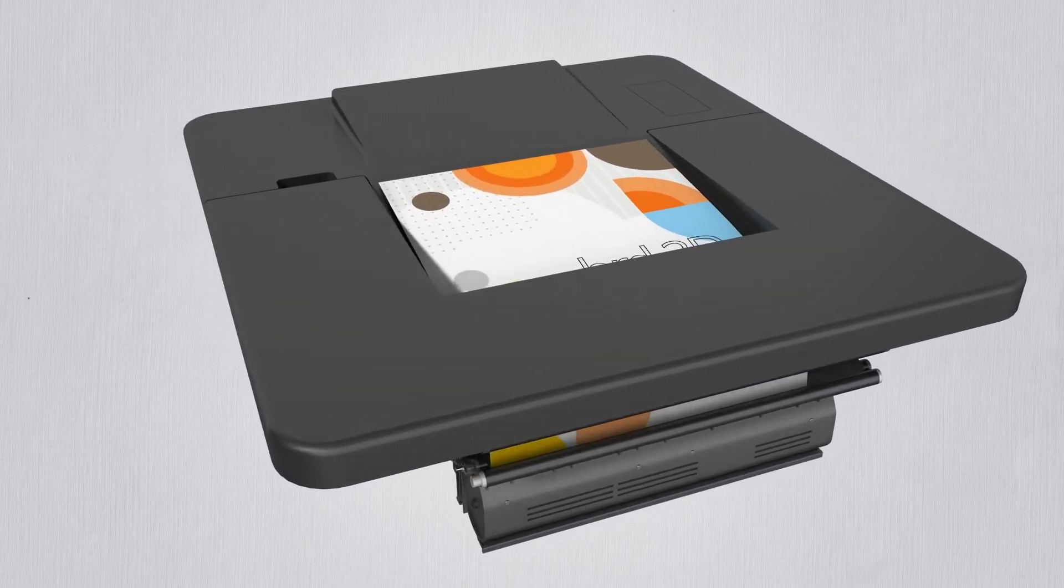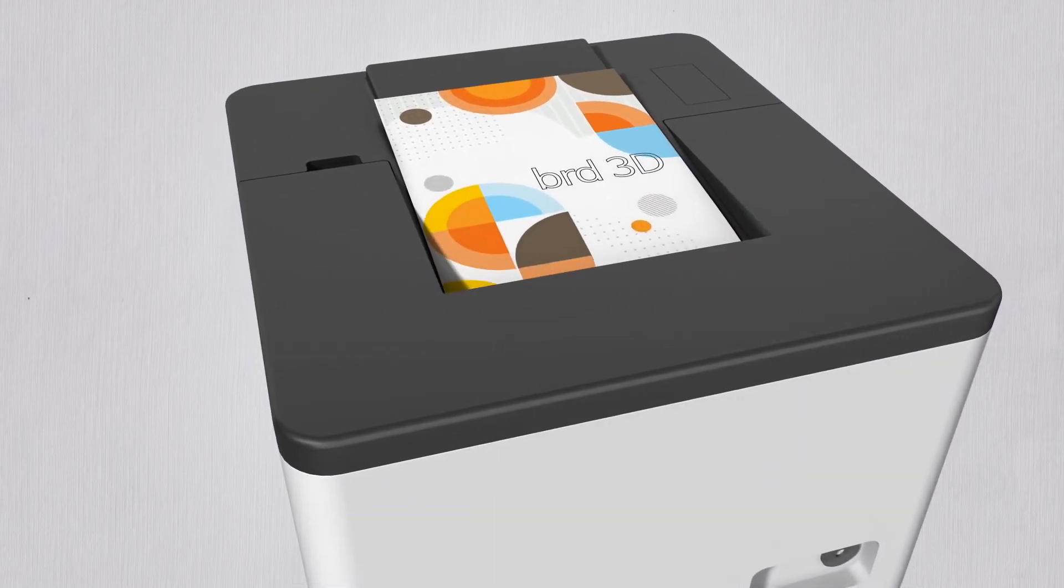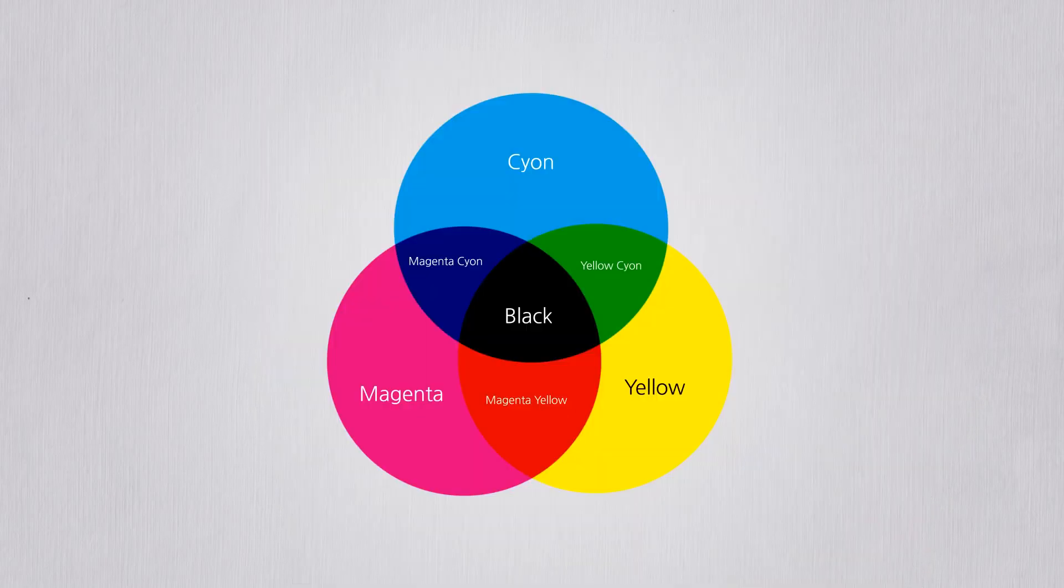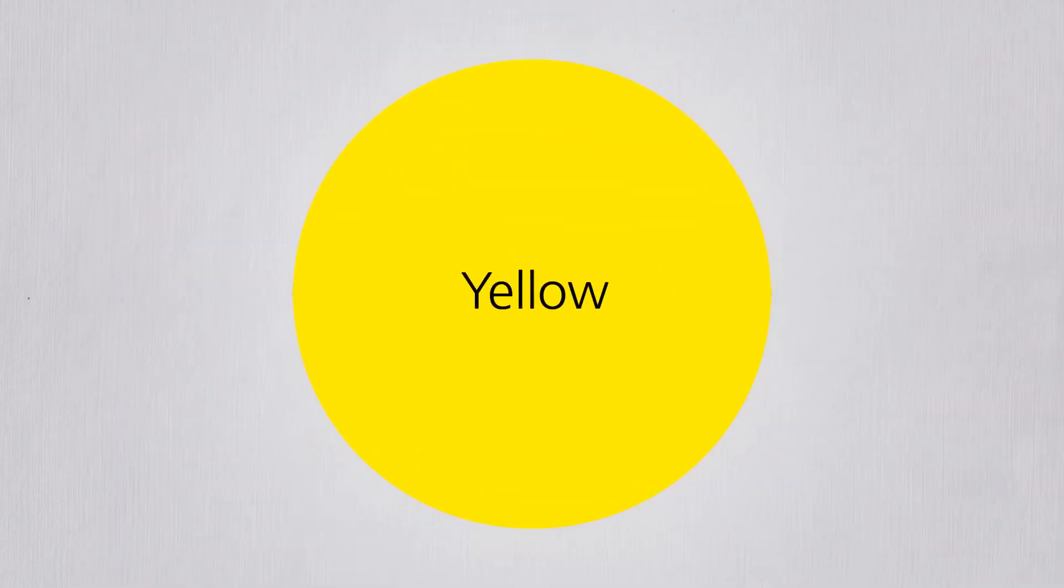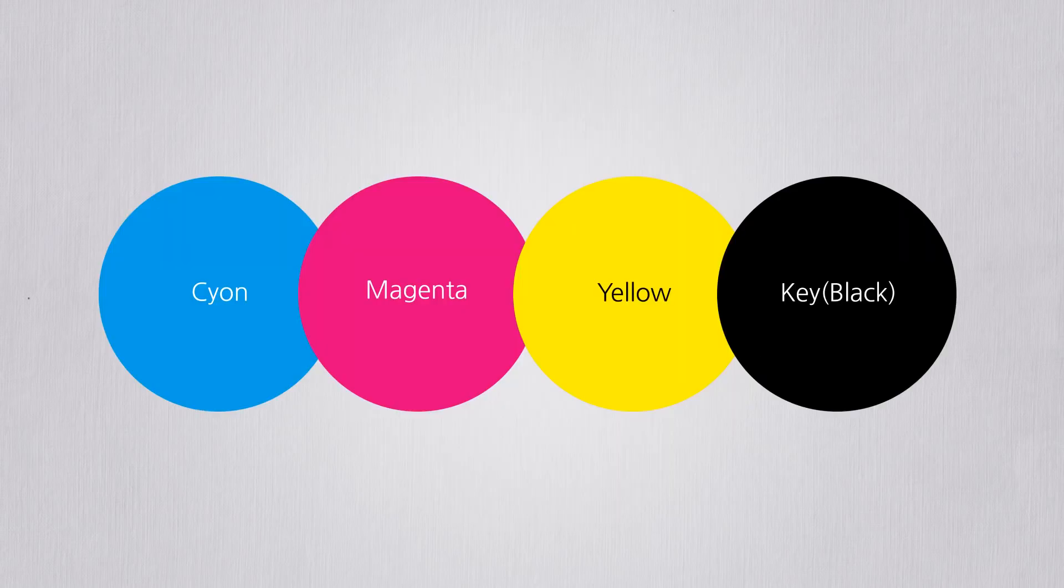In this video we will be going over how a printer works. Before we start, let's go over the color scheme of CMYK used in printing: cyan, magenta, yellow, and key. A variety of colors are described using the mixes above.